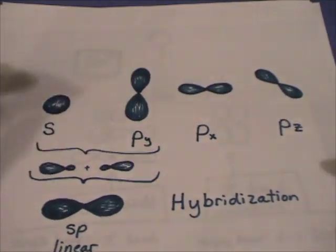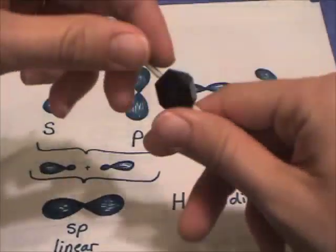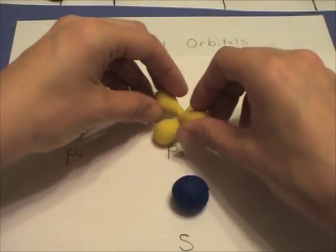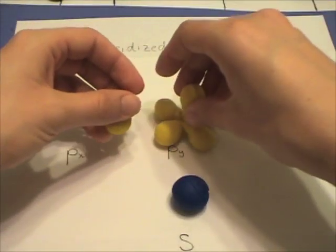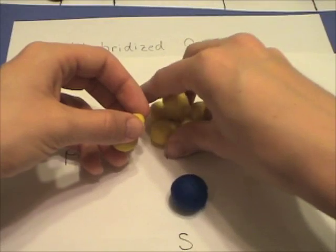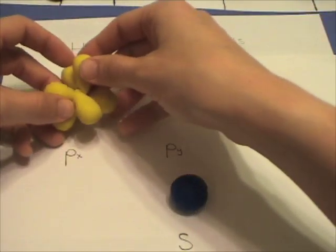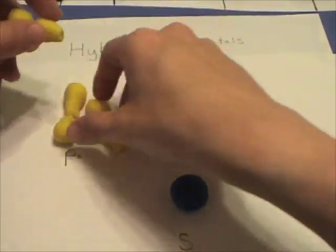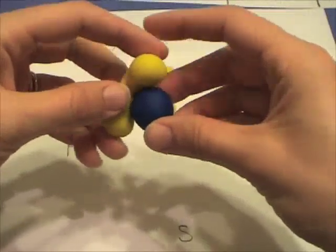There are three different types of p orbitals: on the x-axis, the y-axis, or the z. So they're actually all together with the same nucleus in the center. But we separate them out so that you can look at one at a time.